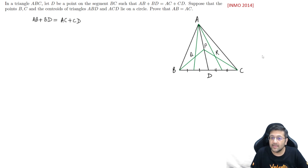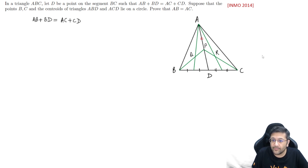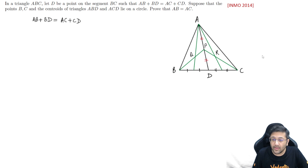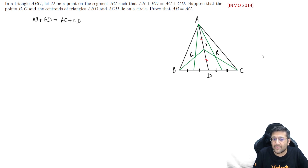One more thing: AP equals PD because BP is also a median. Also, AQ (extended) is the median to BD, and AR (extended) is the median to CD. So the green lines drawn represent medians in their respective triangles.